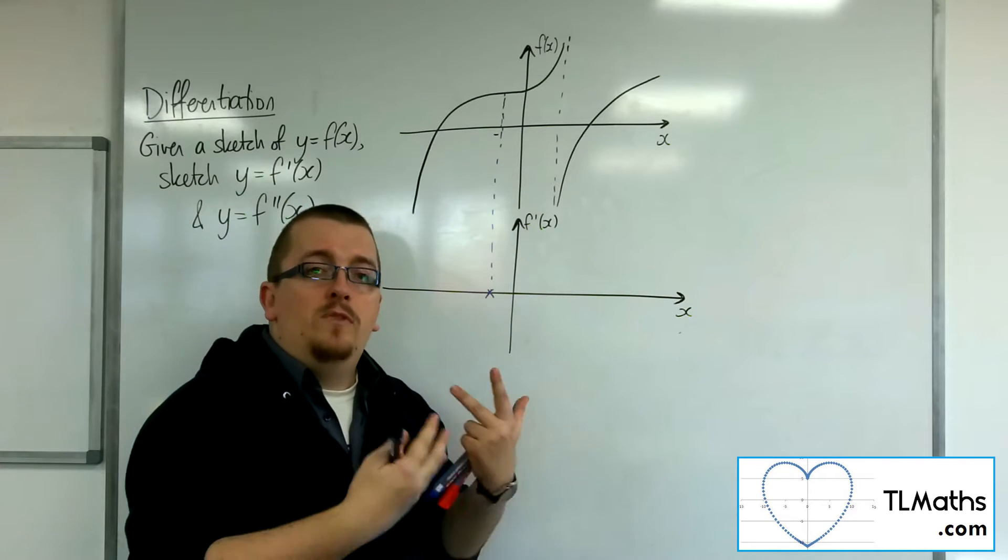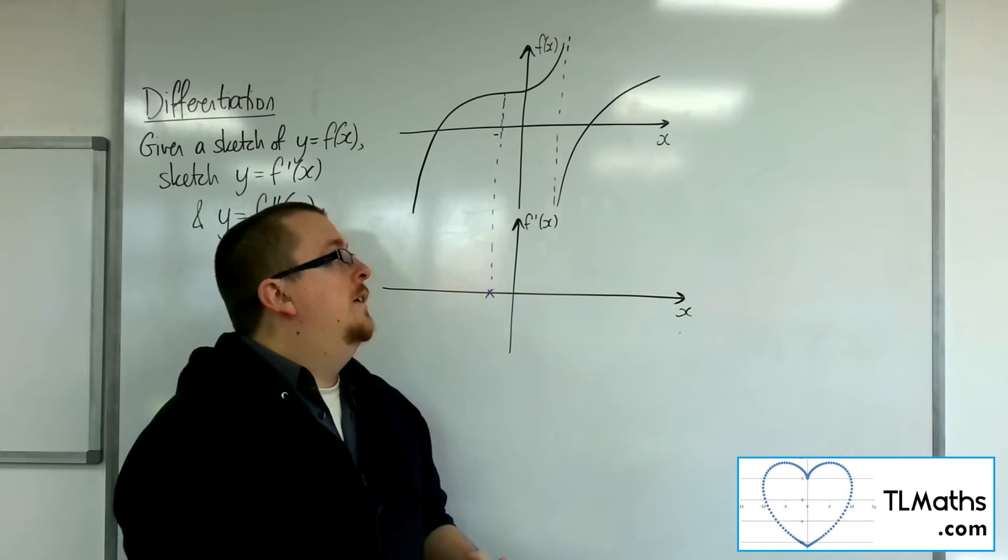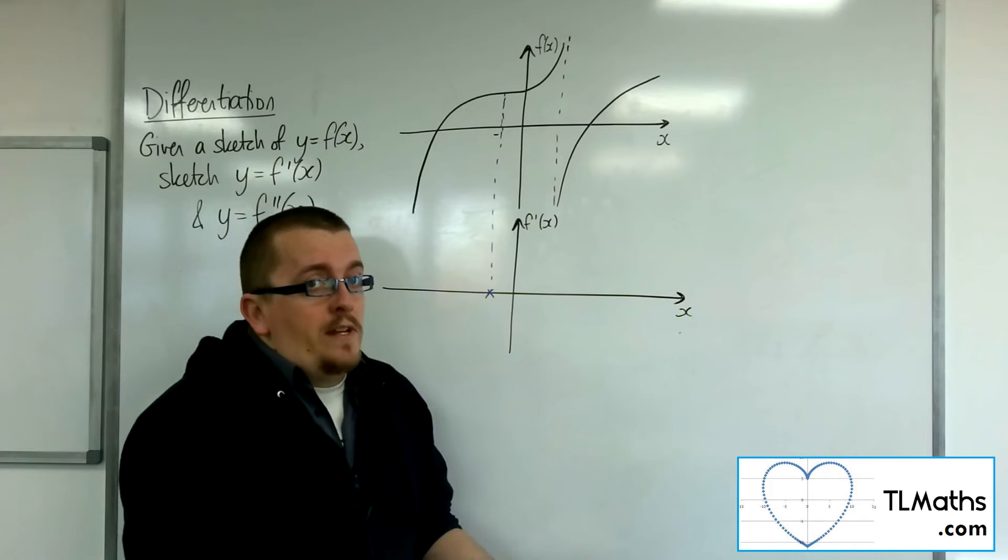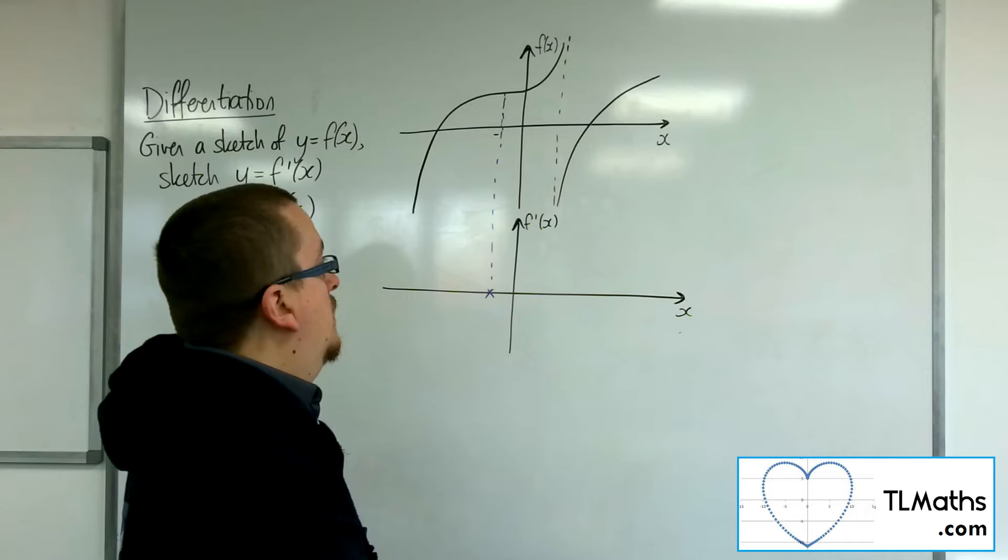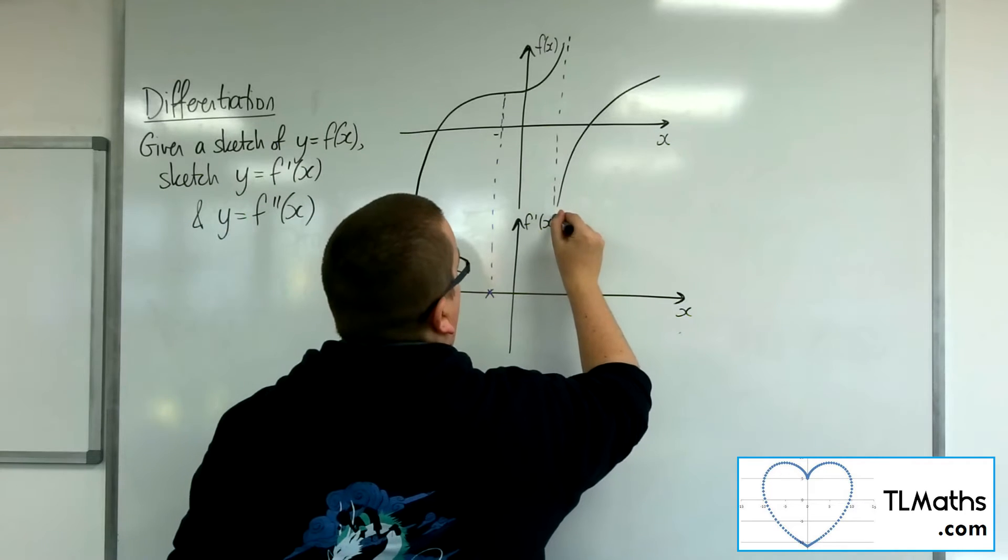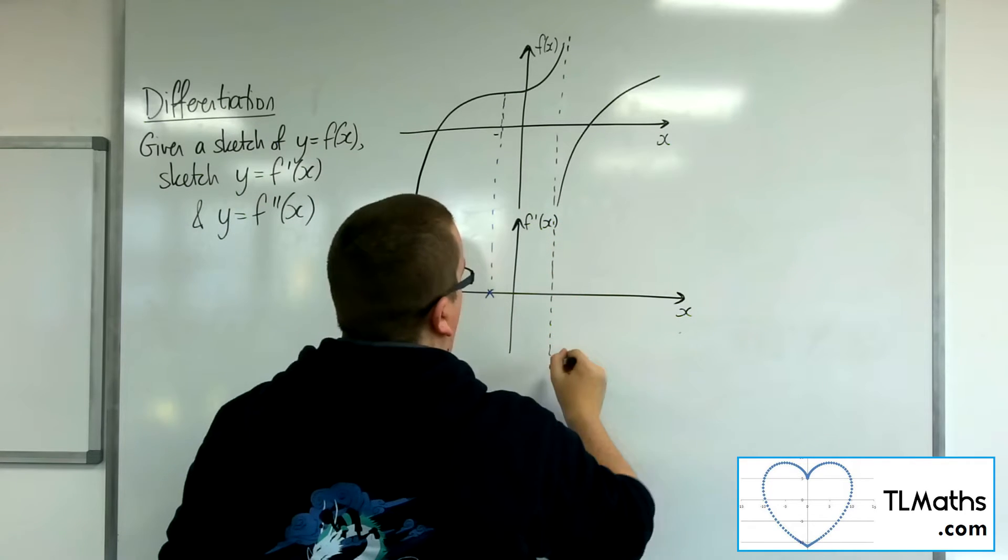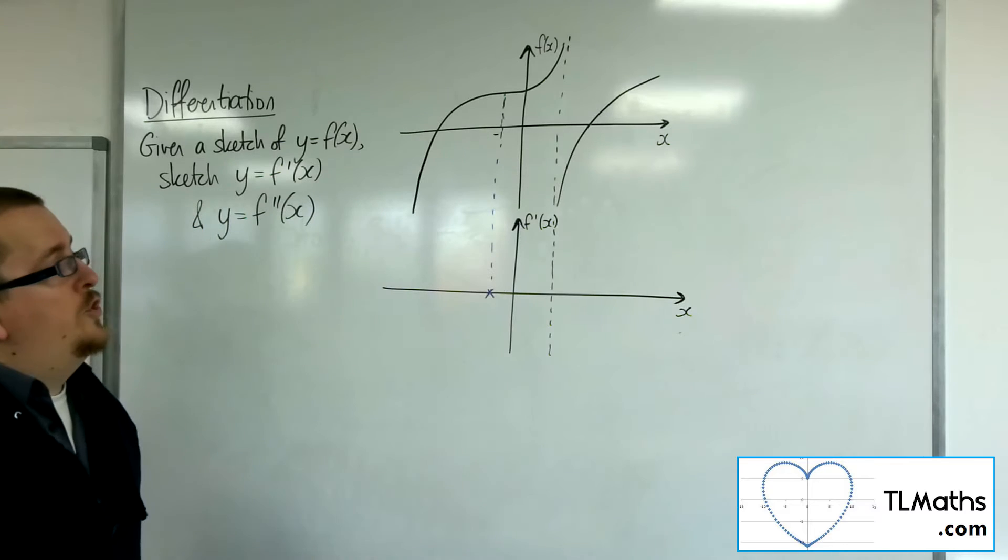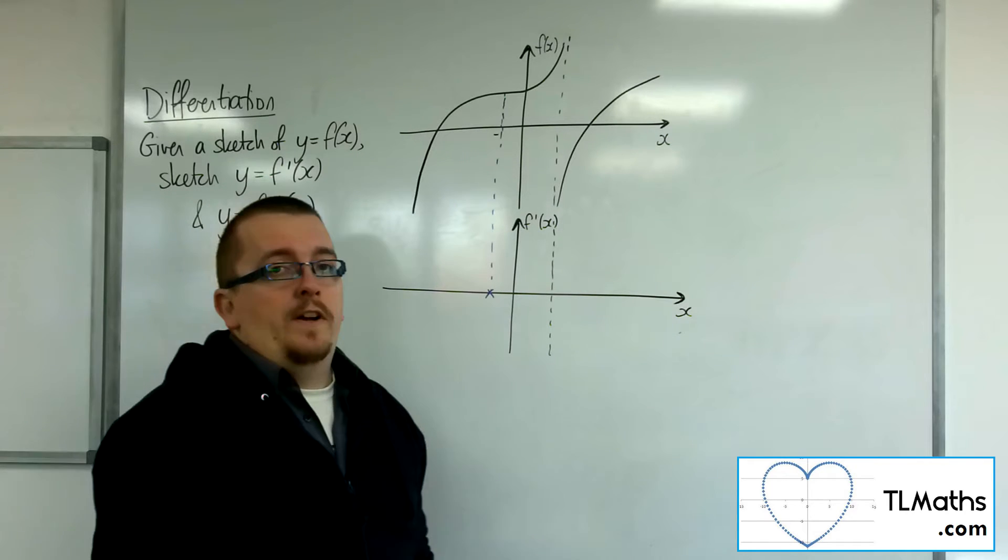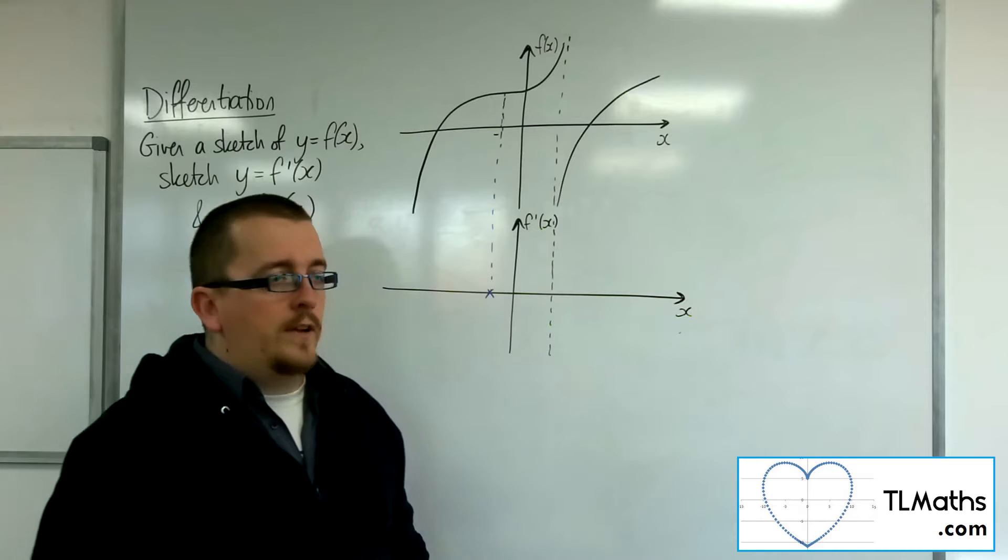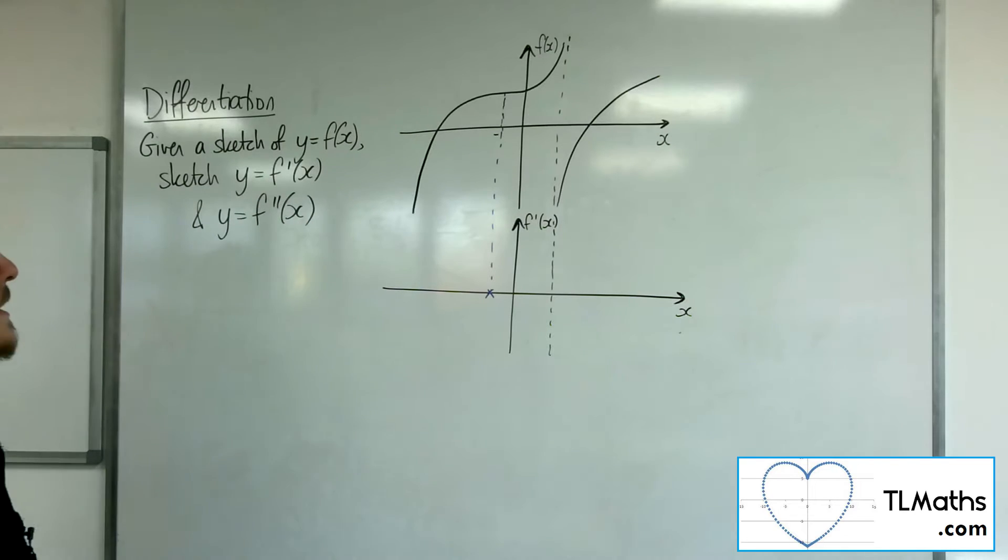Well, seeing as that curve doesn't really exist at that point, nor does the gradient function. So in actual fact, if you've got a vertical asymptote for the original function, then the gradient function will have a vertical asymptote on the same line.